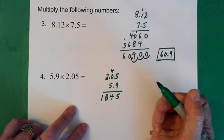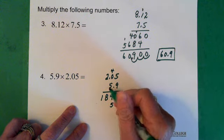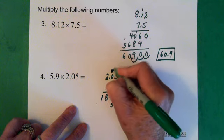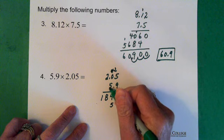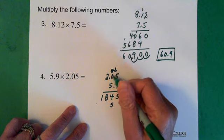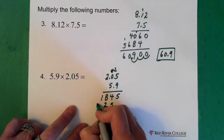5 times 5 is 25. So the 5 goes here and the 2 goes above the 0. 5 times 0 is 0. We add the 2. 5 times 2 is 10.